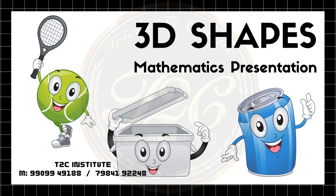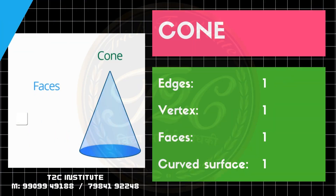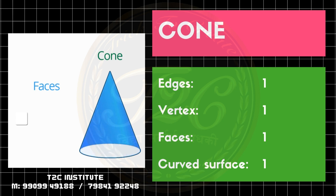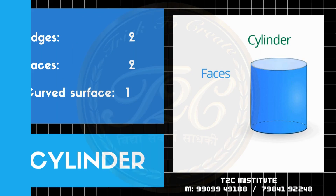Hey friends, we are back with 3D Shapes where we are going to learn vertices, faces and edges. The first shape is cone. Cone is having two faces, one vertex and one edge.